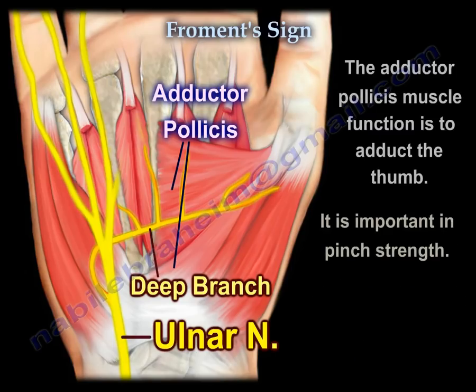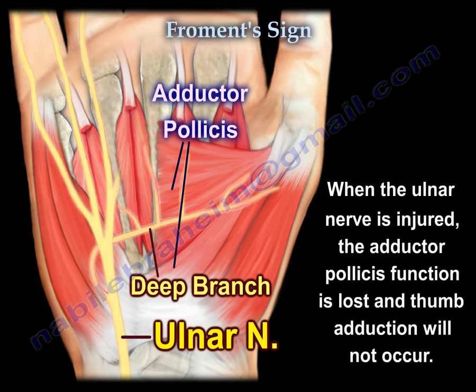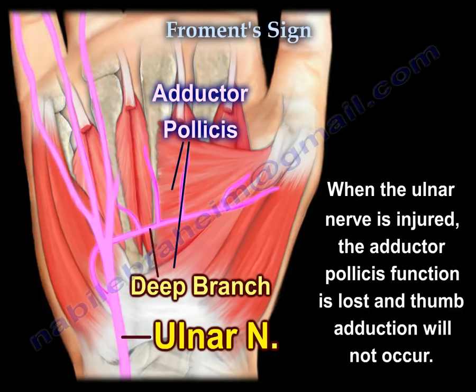The adductor pollicis muscle functions to adduct the thumb and is important in pinch strength. When the ulnar nerve is injured, adductor pollicis function is lost and thumb adduction will not occur.